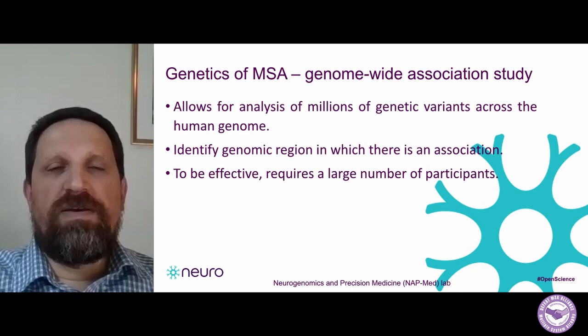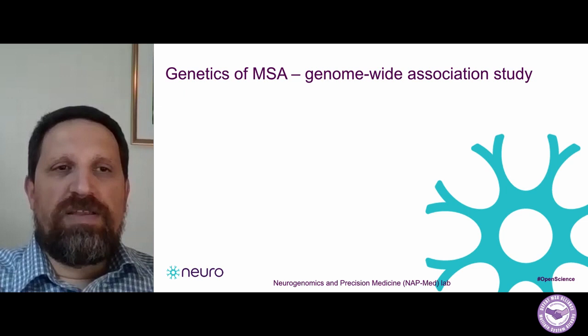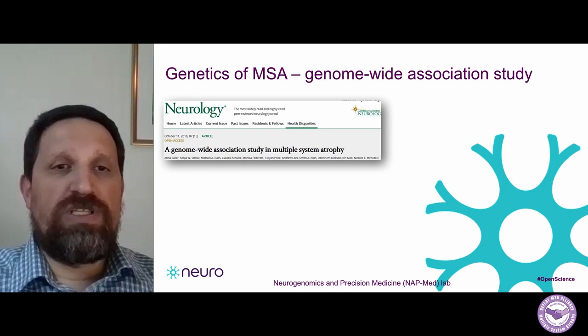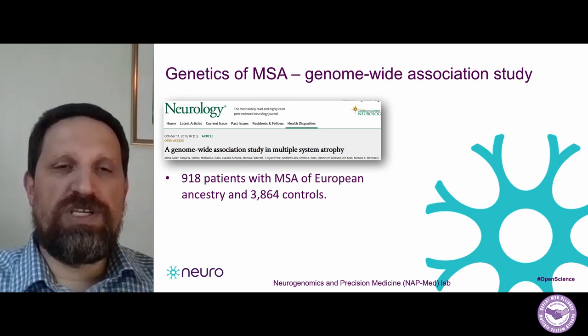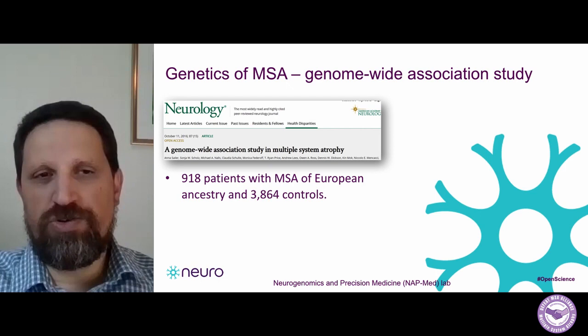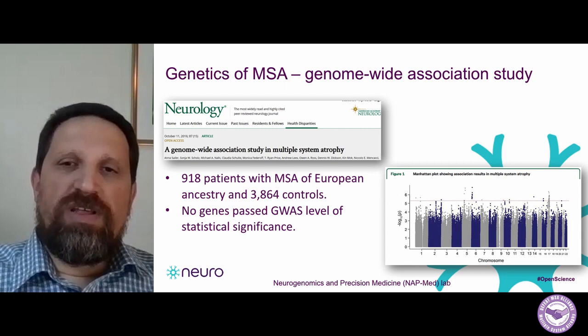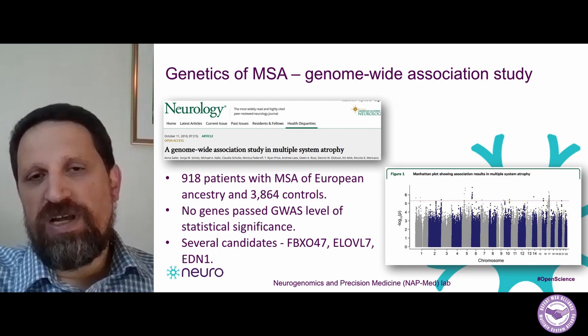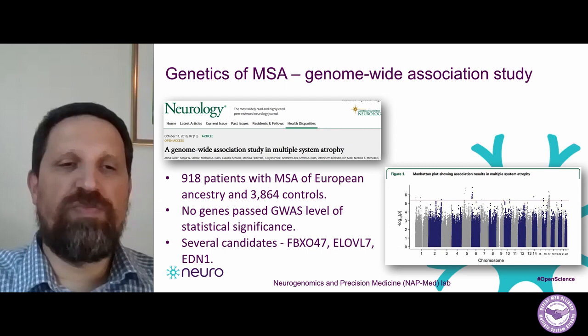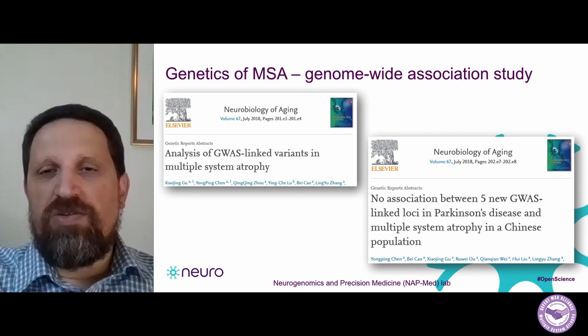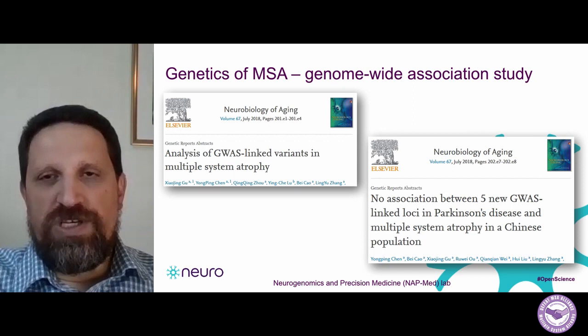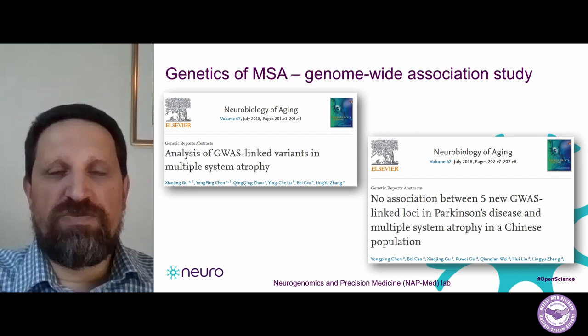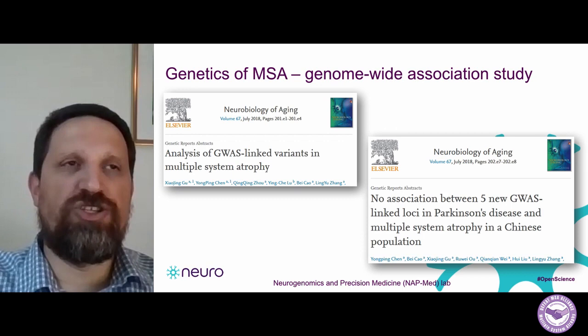The genome-wide association study I mentioned is a way to look at the entire genome of individuals in the study and simultaneously analyze millions of genetic variants. It allows us to identify genomic regions that are involved in the disease — not necessarily a specific gene, but a genomic region. To be effective, the sample size must be very large. This GWAS included a bit over 900 patients and more than 3,800 controls, which is quite large for a disease as rare as MSA but not large for a GWAS. Overall, the authors did not find any gene associated with MSA after correction for multiple comparisons, though they did report several candidate genes.